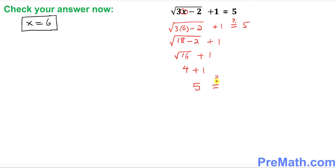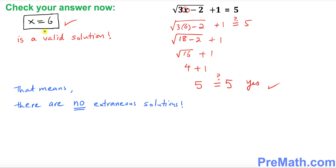The right hand side is 5. On the left hand side, square root of 16 is 4, plus 1 equals 5. Are both sides the same? Yes — so we have checked our solution, and x equal to 6 is a valid solution.